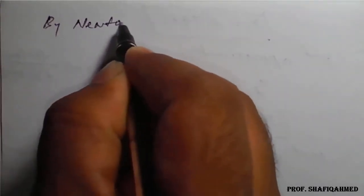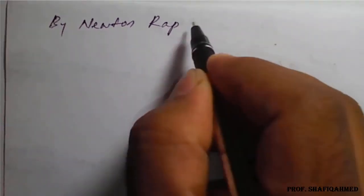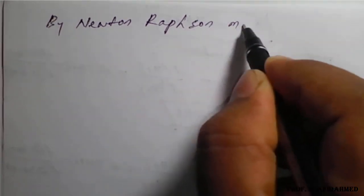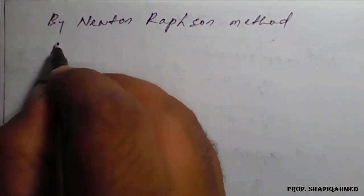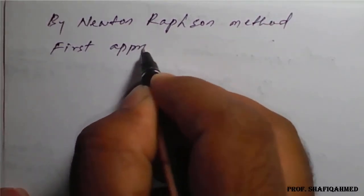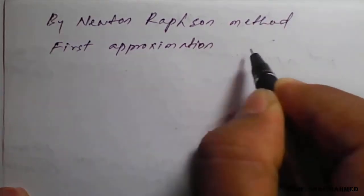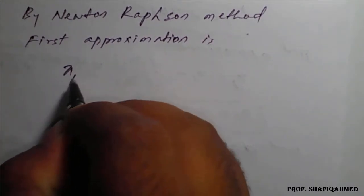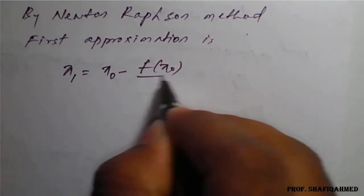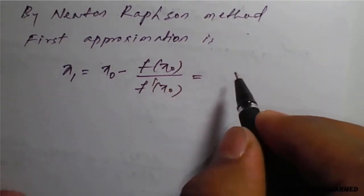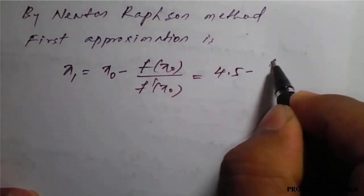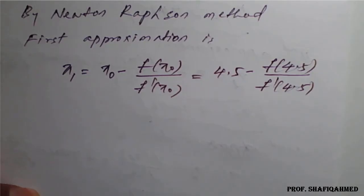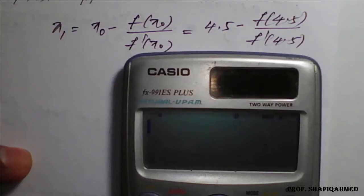By Newton-Raphson method, first approximation is x1 equals x naught minus f of x naught divided by f dash of x naught. x naught value from the given question is 4.5 minus f of 4.5 divided by f dash of 4.5. Our f of x and f dash of x we know, so we will apply that formula in the calculator.